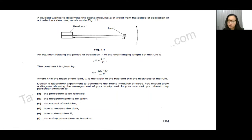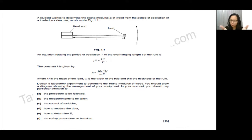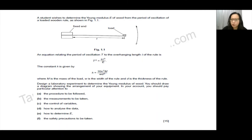Now let us try with a past year question. I'm going to discuss step by step how to answer it. A student wishes to determine the Young's modulus E of wood from the period of oscillation of a loaded wooden ruler. The equation is t² = kL³/E, where k = 16π²m/(wd³), m is the mass of the load, w is the width of the ruler, and d is the thickness. Design a laboratory experiment to determine the Young's modulus of the wood. I would suggest drawing a labelled diagram every single time.